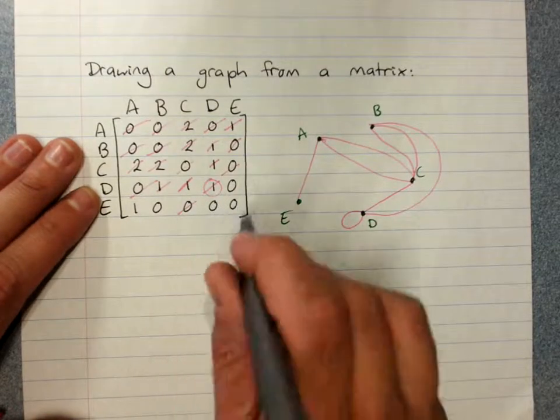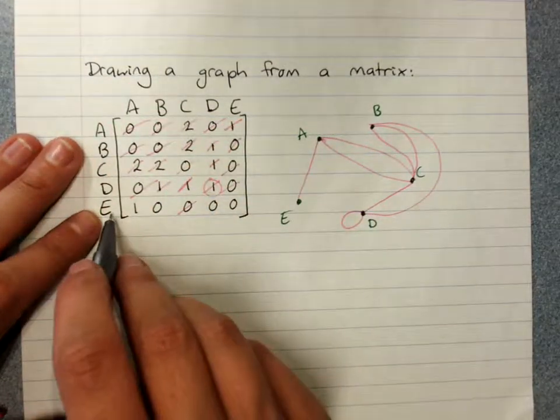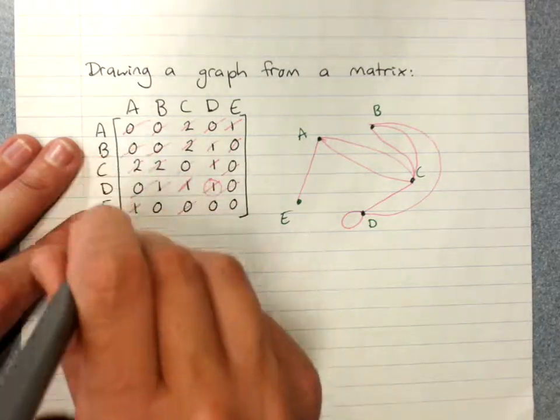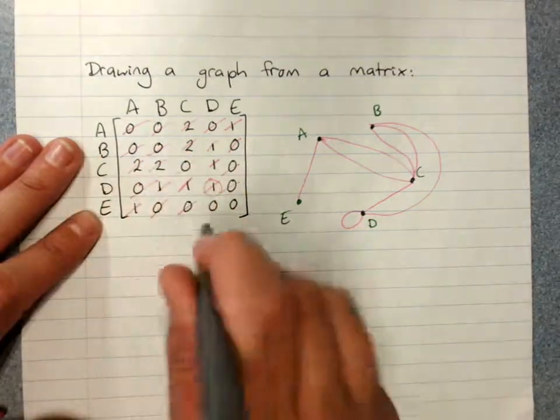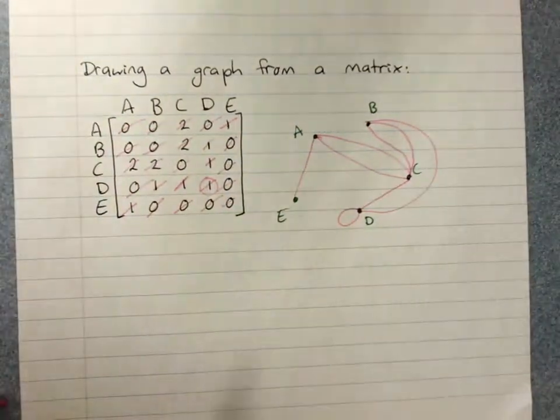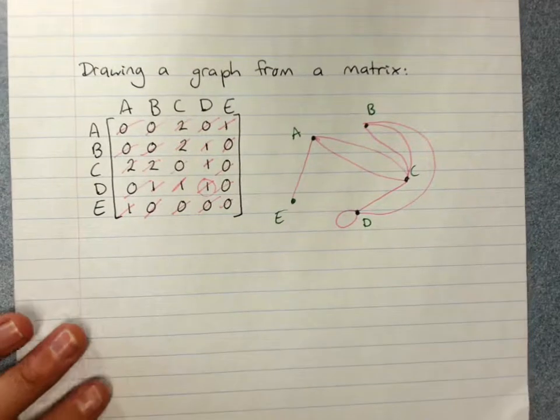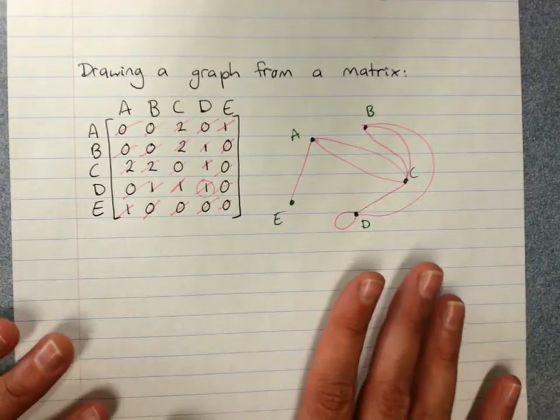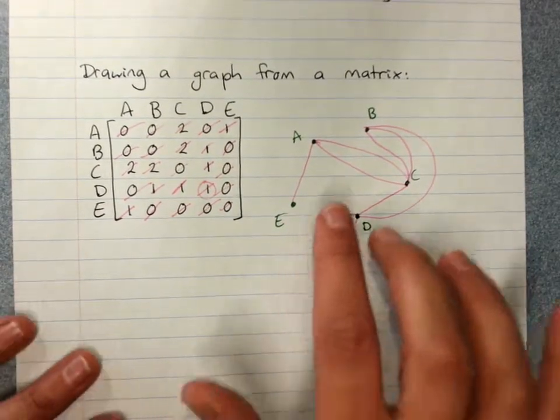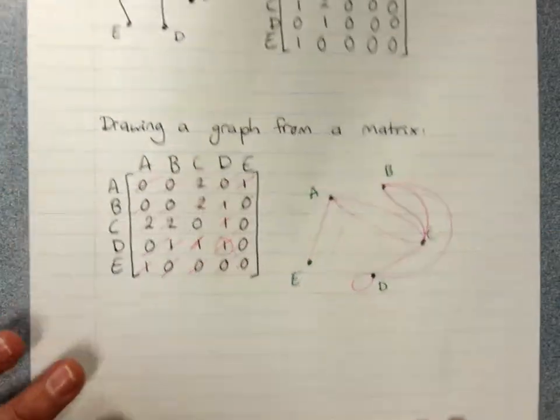D to E, nothing. E to A, we've got it. E to B, nope. And nothing. So we've done a graph that works. But all sorts of different graphs could have occurred there, depending on how we organized our vertices.